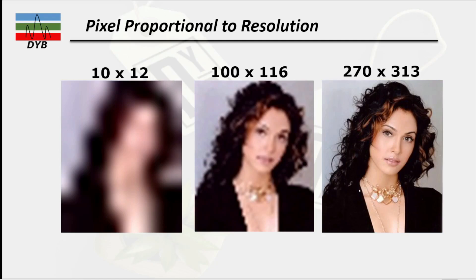If you look at the summary: when we are taking 10 into 12, 100 into 116, 270 by 313 — it goes from not clear to more and more clear. This is the difference — how we use the pixel resolution in graphics resolution.